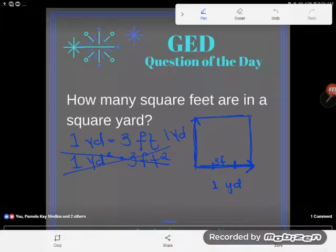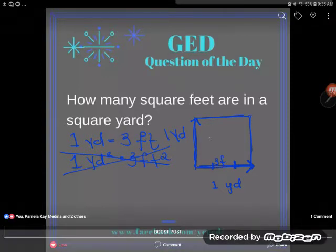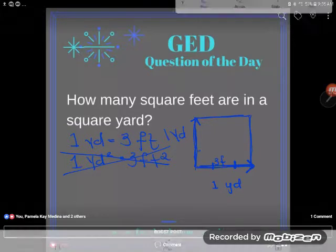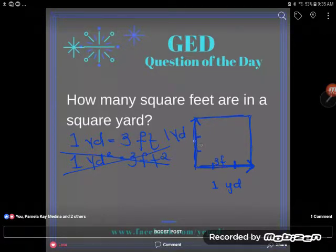this shape in squares, and so I'm going to need to consider how many rows of feet that I have going up this way. So this one square yard is also going to be equal to three feet. Okay, and let's just draw these through. If I have three feet going this way and three feet going this way,